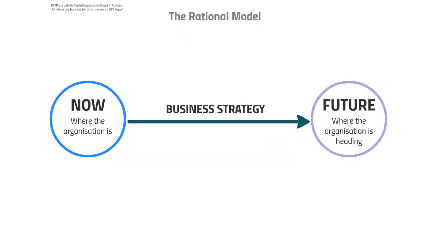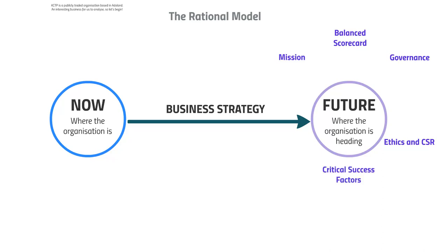To identify the now, the future, and the business strategy, we'll look at various things such as the mission and values of the organization, the balanced scorecard, governance, ethics and corporate social responsibility, critical success factors, and stakeholder expectations. We'll then examine where the company currently is using a PESTEL analysis, Porter's Five Forces for the technology park industry, and a SWOT analysis.